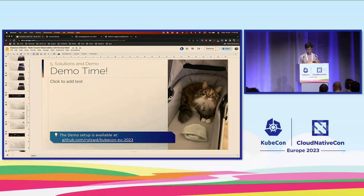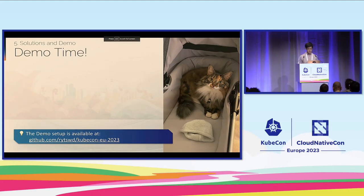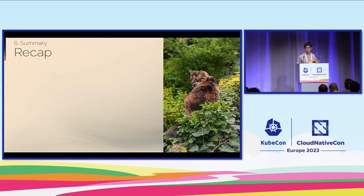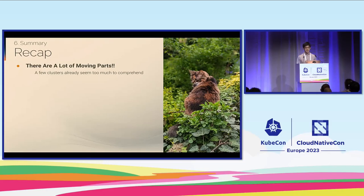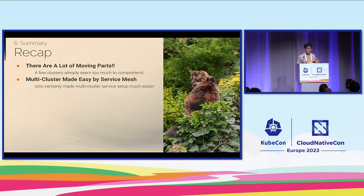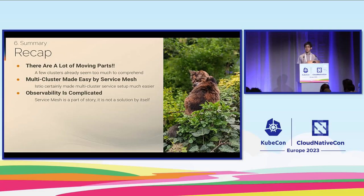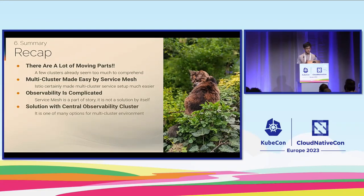Going back to the slides for a summary. A quick recap on the demo — there are a lot of moving parts, and I couldn't get a hold of them all. I only had three clusters and that was already a lot. Multi-cluster is definitely made easier by Service Mesh, but it doesn't solve everything. Istio certainly has focus on supporting multi-cluster scenarios in several ways, but observability is still complicated. Service Mesh is only part of the story. The solution with a central observability cluster is one of many options for multi-cluster environments, and probably the easiest to wrap your head around.